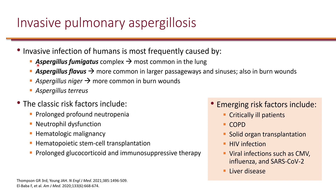Here are the common aspergillus species. Most pulmonary aspergillosis is due to Aspergillus fumigatus as well as Aspergillus flavus. The rest are not commonly seen in the lung — for example, Aspergillus niger is more common in burn wounds. Classic risk factors for aspergillosis include prolonged profound neutropenia — essentially absolute neutrophil count under 100 — neutrophil dysfunction, hematologic malignancy, hematopoietic stem cell transplantation, and prolonged glucocorticoid and immunosuppression therapy.